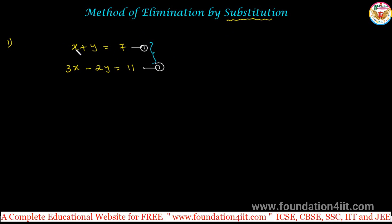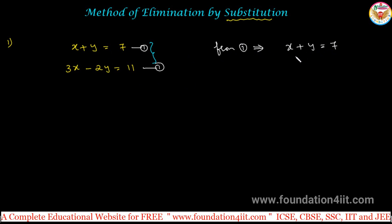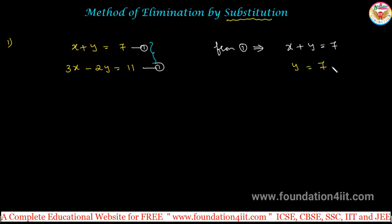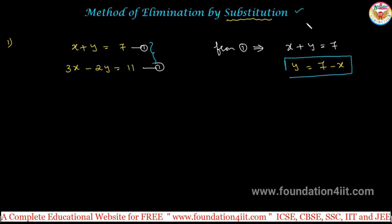Substitution means we have two variables x and y. From equation 1, take any one equation — generally the one with smaller numbers. From x + y = 7, we can find out one variable value, either x or y. I am taking y. Then y = 7 − x. So y value is now in terms of x. This value of y we will substitute in the second equation in the place of y — that is the substitution method.